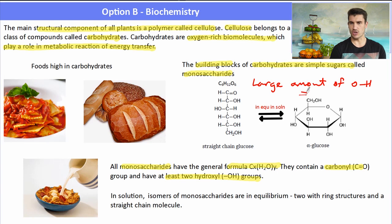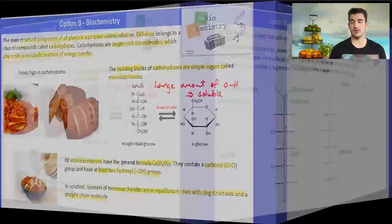In solution, isomers of these monosaccharides are in equilibrium with the ring structure and the straight chain molecule. The large amount of OHs makes these molecules very, very soluble. So large amounts can be dissolved in a small amount of water.